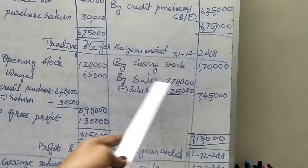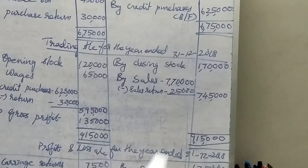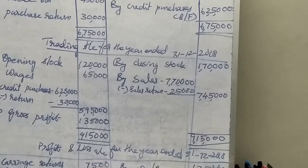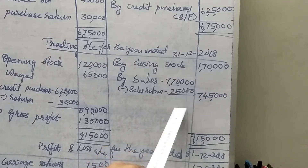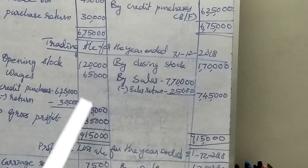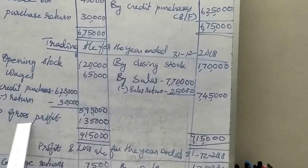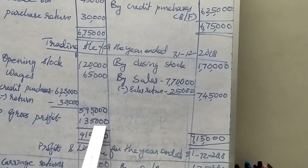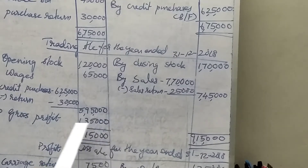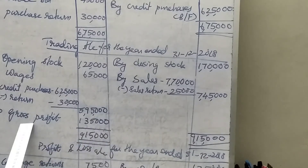On the credit side: closing stock 1,70,000. Sales given as 7,70,000, minus sales returns 25,000, giving net sales of 7,45,000. Balance and find out the gross profit — gross profit is 1,35,000. Total is 9,15,000 on both sides. That is the gross profit.